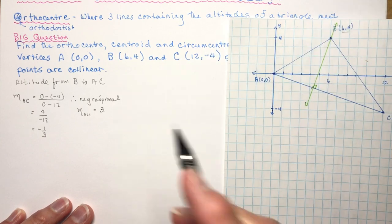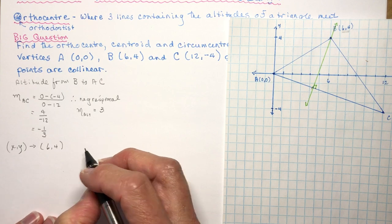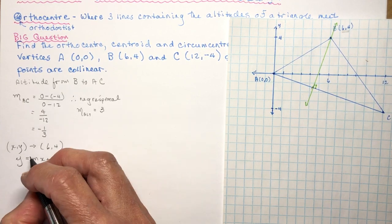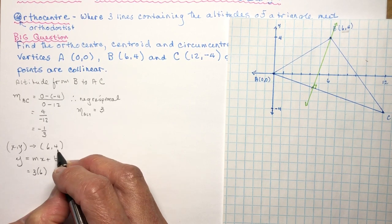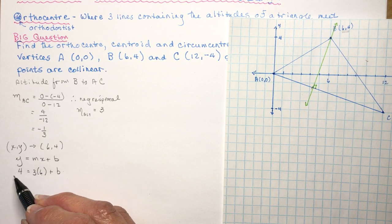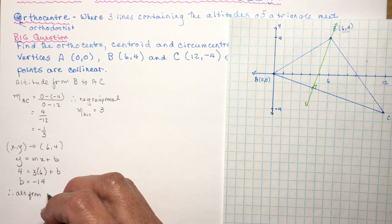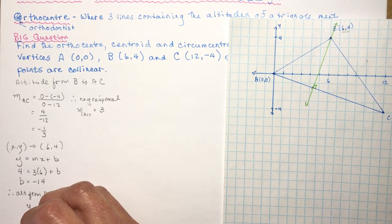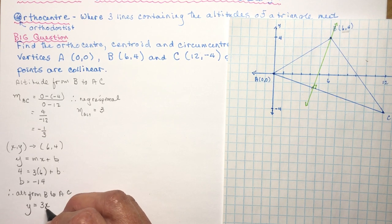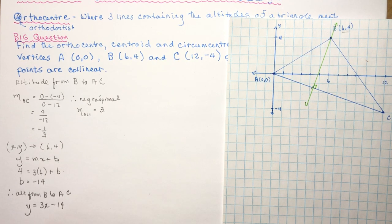I have slope 3 and the point — vertex B at (6, 4). Using y = mx + b, I plug in slope 3, x = 6, y = 4, giving 4 = 3(6) + b, so 4 = 18 + b, meaning b = −14. Therefore the altitude from B to AC is y = 3x − 14.